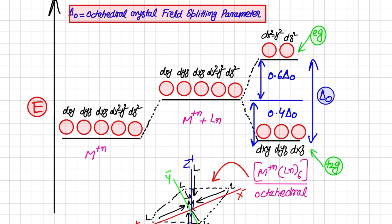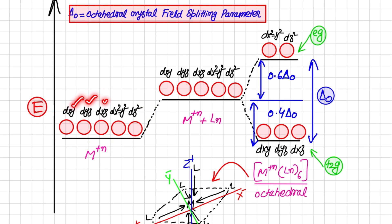Looking at the energy diagram, as we go upward energy increases. The five d orbitals are dxy, dyz, dxz, dx²-y², and dz². As ligands approach the central metal atom or ion, all these orbitals experience electrostatic repulsion between the electrons of the ligand and electrons of the metal, causing all of them to go higher in energy.